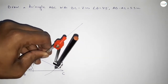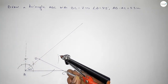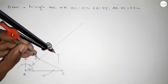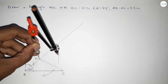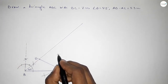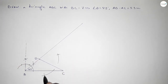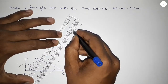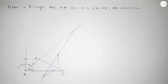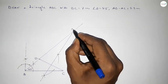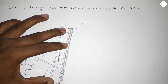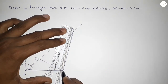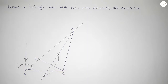Next, bisecting DC: putting the compass here and taking greater than half of DC, drawing arcs on both sides. With the same length, putting the compass here and cutting here on both sides. Both curves intersect at two points — joining this bisector, which meets the line at point A. Now joining A and C, so by joining this we get triangle ABC.